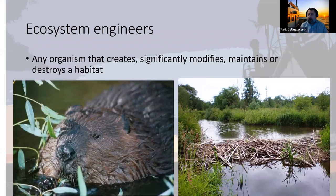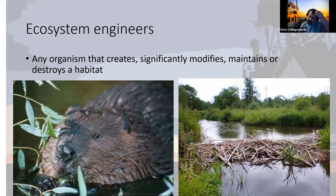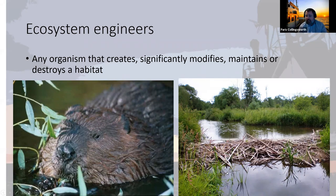The big difference between zebra and quagga mussels is that zebra mussels need a hard substrate to attach to — things like industrial pipes, which they would clog. But quagga mussels can settle anywhere; they don't need hard substrates, so they can fill up the whole bottom of the lake. That's had a lot of implications for the food webs of the Great Lakes, because quagga mussels are what we call an ecosystem engineer — any organism that can come into a system and create and modify the ecosystem to benefit themselves.